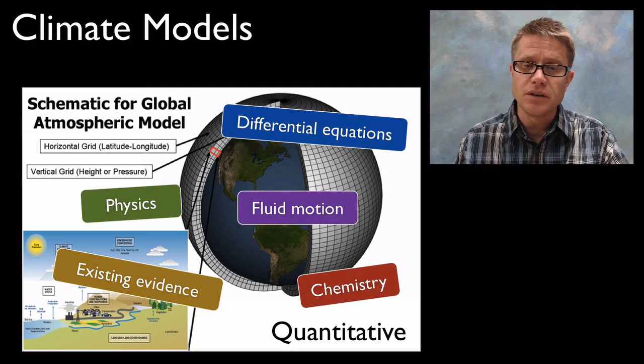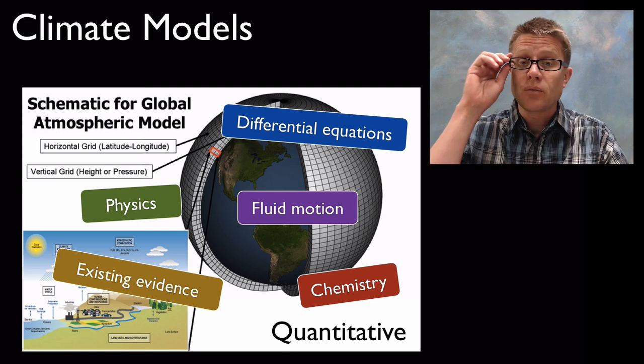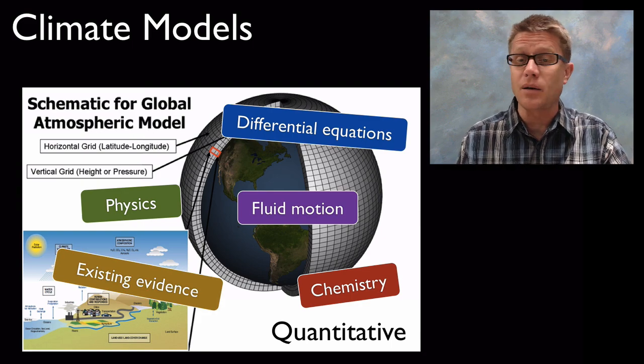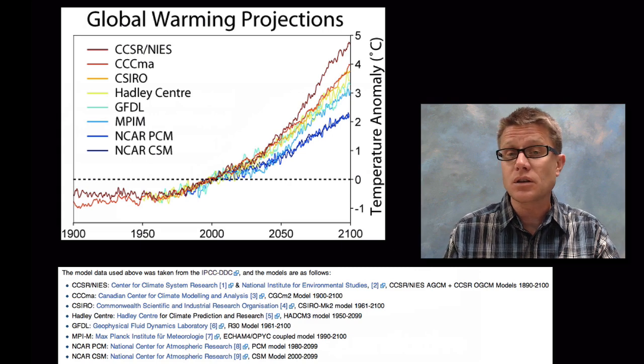We're using science, physics, fluid motion and chemistry. We're using evidence that we have today. Then we're using differential equations, calculus and computers to predict what's going to happen in the future. And what we're finding is that the future doesn't look that bright.